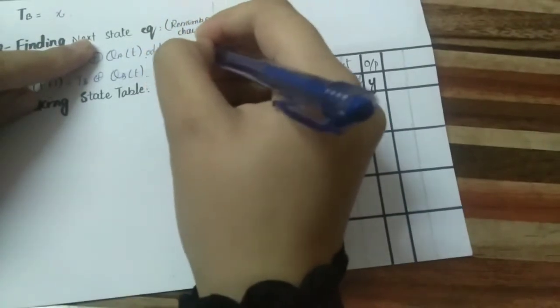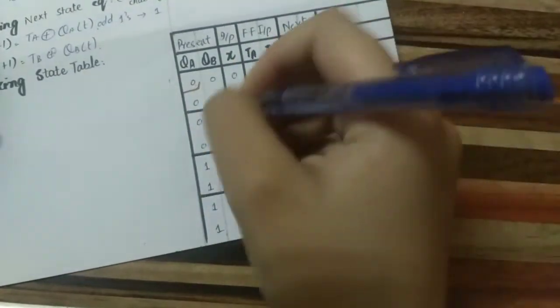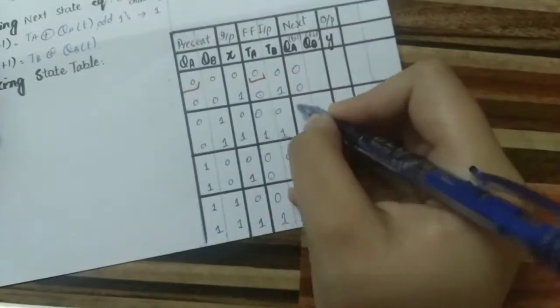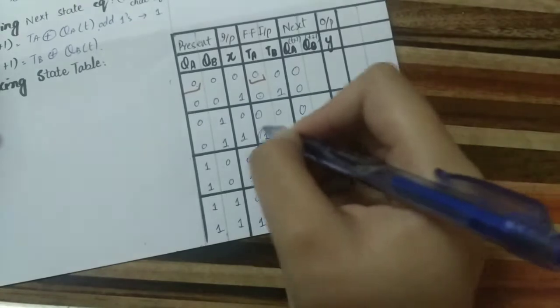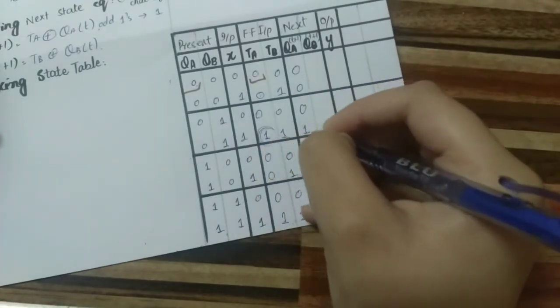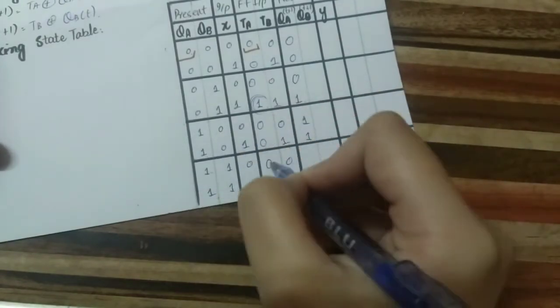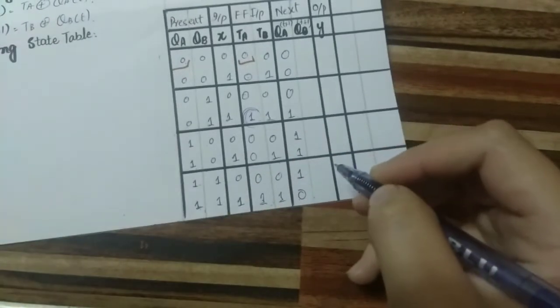In XOR, when you have an odd number of ones, the output is one. So similarly here, when there is an odd number of ones in a row, the output will be 1; otherwise it will be 0. For the next state of Q_A, we XOR the T_A column values with the Q_A column values.